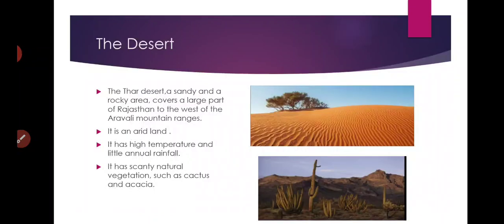Desert. A desert is a rocky and sandy area. In our country, it is the Thar Desert. It is in Rajasthan, in the western direction. India ke west side mein Rajasthan mein Thar Desert hai. And it is a sandy and rocky area that covers a large part of Rajasthan.